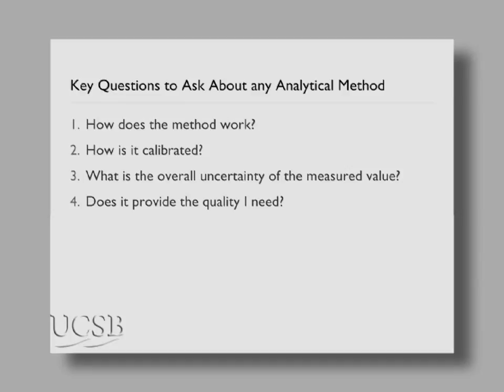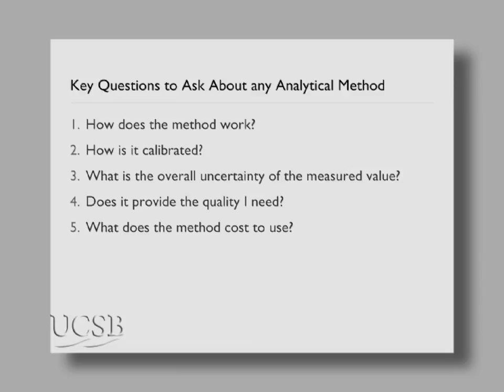A key question when thinking about a method: does it provide the quality I need? If I get that overall uncertainty, is that what I needed for my scientific purposes? And realistically, what does it cost to use? Because if you can't afford to use it, then so be it — but something else has to give if it really is what you need to do to provide the quality required.